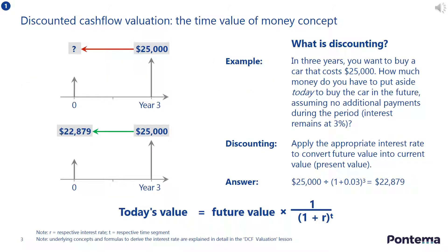To begin with, the discounted cash flow method adjusts valuations for the time value of money. In other words, the estimated future cash flows of an organization or asset are used to value it, but the cash flows then need to be adjusted to their present value to reflect the time value of money. This is done by using a discount rate, which is usually an organization's cost of capital, or more commonly known as the weighted average cost of capital.